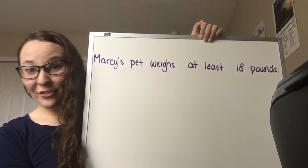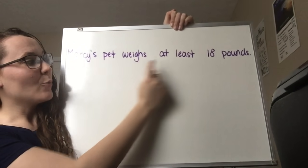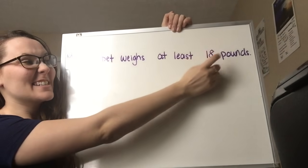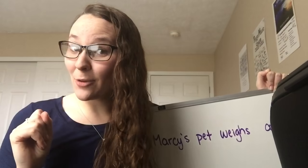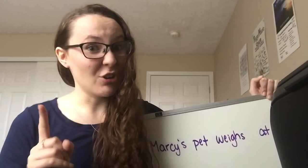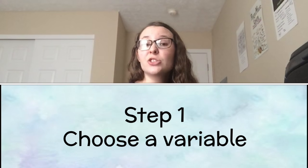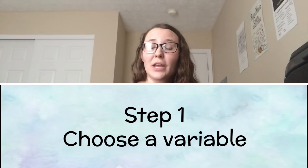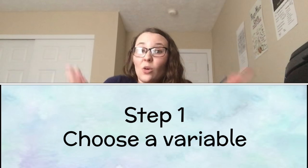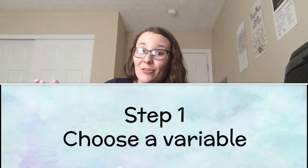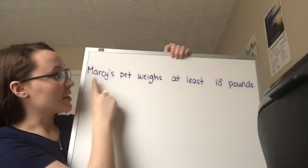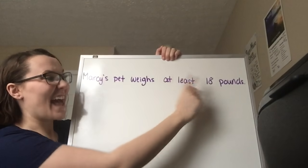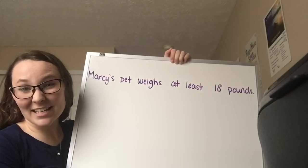So here's our first example: Marcy's pet weighs at least 18 pounds. We can rewrite this as an inequality and I'm going to show you how. Step number one is to choose your variable. In order to do this we have to decide what we don't know. So let's look back at our original example — Marcy's pet weighs at least 18 pounds.